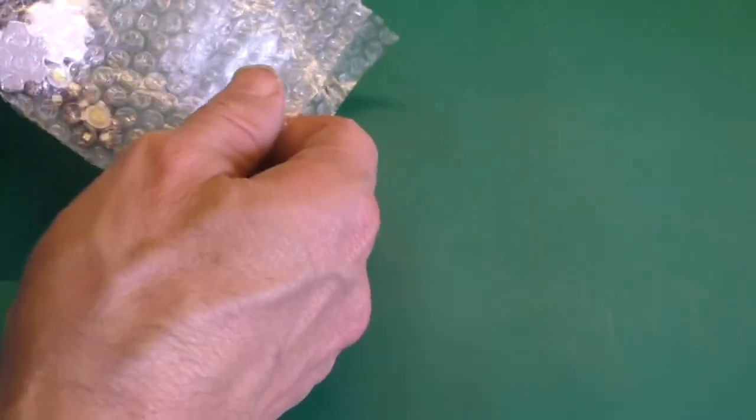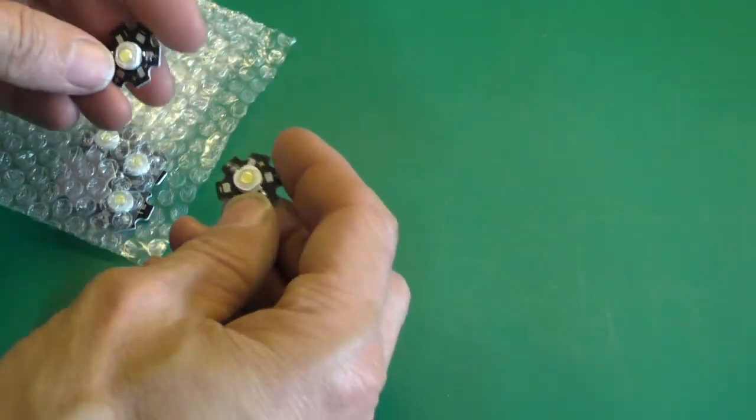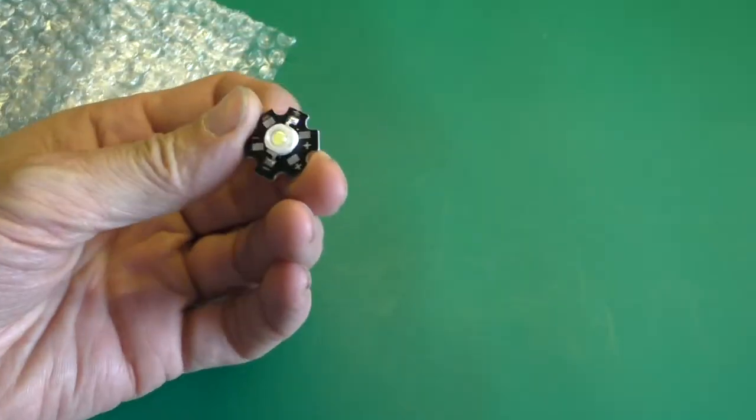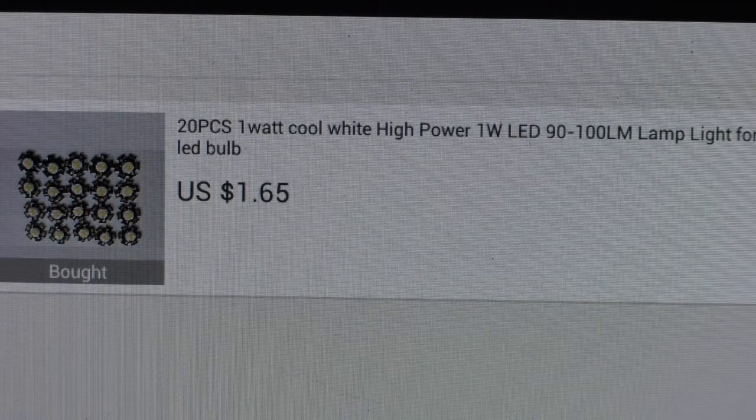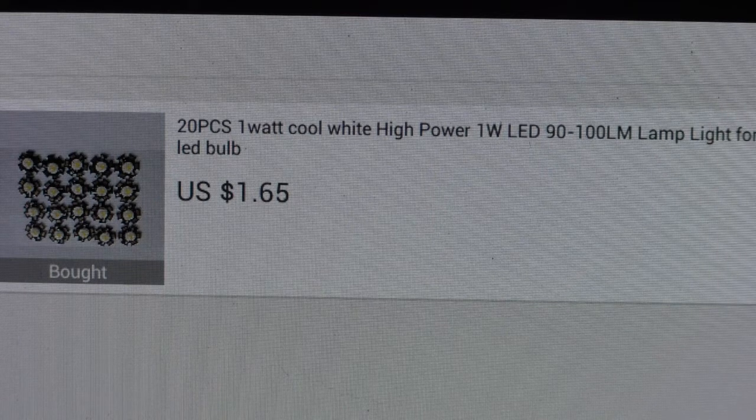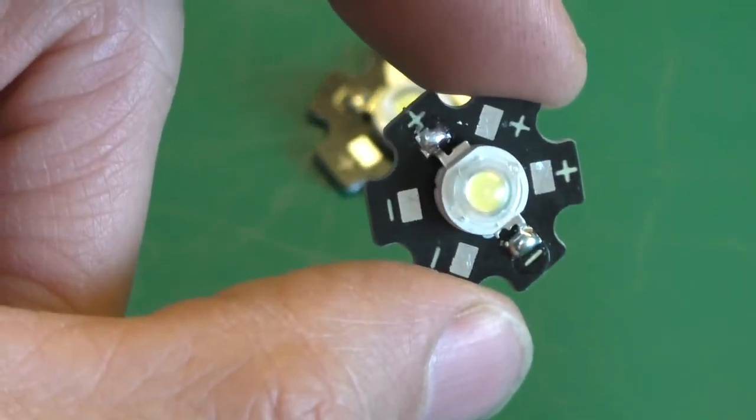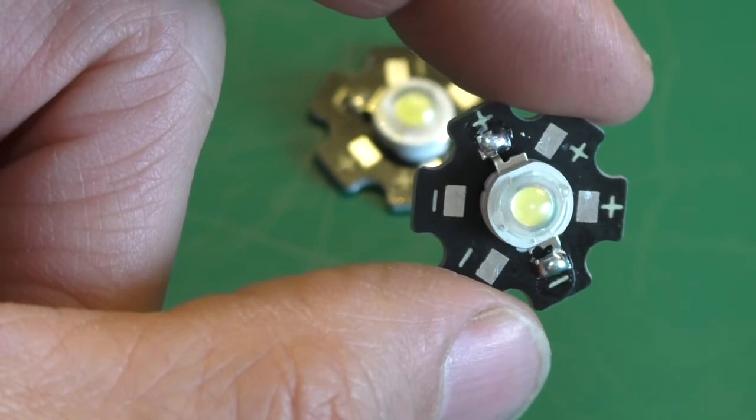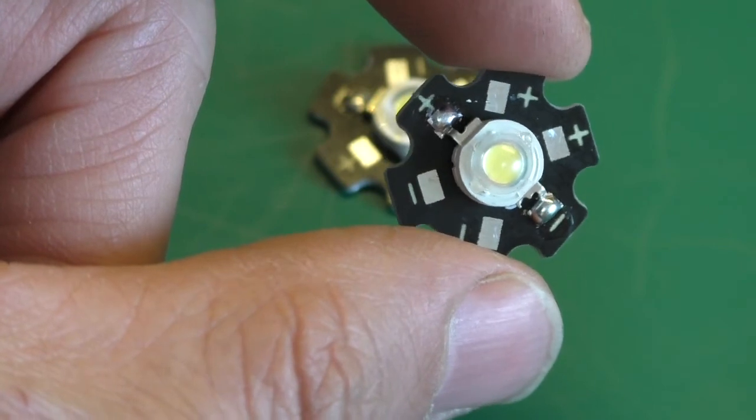Good afternoon everyone. I've got the eBay listing that I couldn't resist. A bunch of these little 1-watt LEDs. Here is the eBay listing. I paid a whopping $1.65 for 20 1-watt LEDs. On these LEDs they came equipped with heat sink. There are 3 little positive markers and 3 negative markers, and of course the positive is voltage and negative is ground.